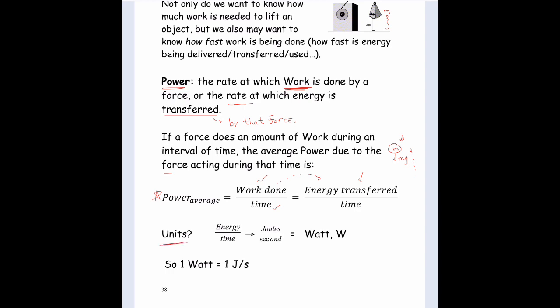If you look at the units of power: power is the rate at which work is done, and work is a transfer of energy, so it's energy per time. Energy has units of joules, and the SI unit of time is seconds. A joule per second is called a watt. In this chapter, W can stand for three things: work, weight, and watt — so watch the context. You might want to write it differently or just write out the word watts.